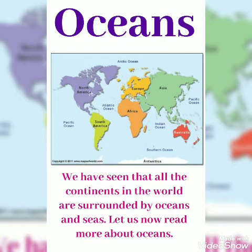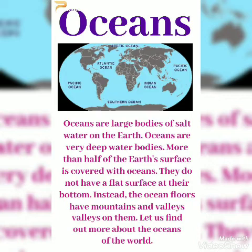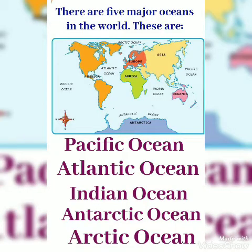We have seen that all the continents in the world are surrounded by oceans and seas. Let us now read more about oceans. Oceans are large bodies of salt water on the earth. They are very deep water bodies, and more than half of the earth's surface is covered with oceans. The ocean floor does not have a flat surface; instead, it has mountains and valleys. There are 5 major oceans in the world: the Pacific Ocean, Atlantic Ocean, Indian Ocean, Antarctic Ocean, and Arctic Ocean.